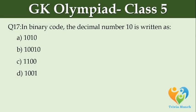In binary code, the decimal number 10 is written as ___. Option A: 1010. Option B: 10010. Option C: 1100. Option D: 1001.